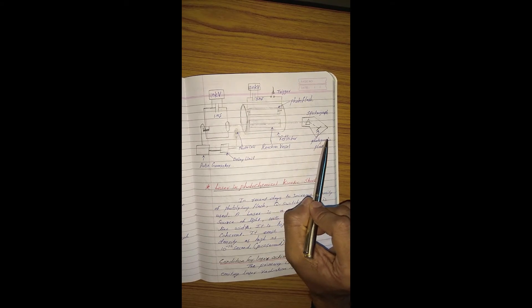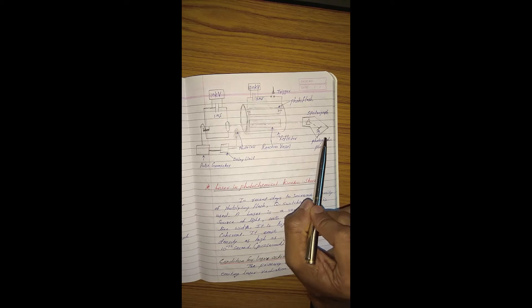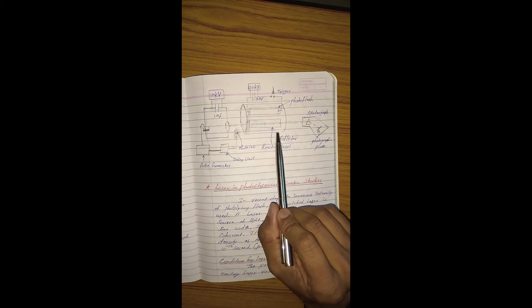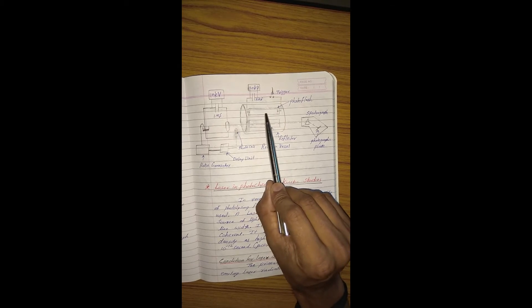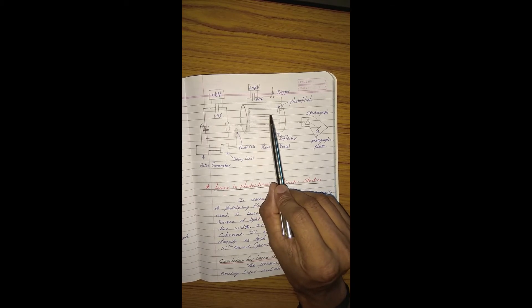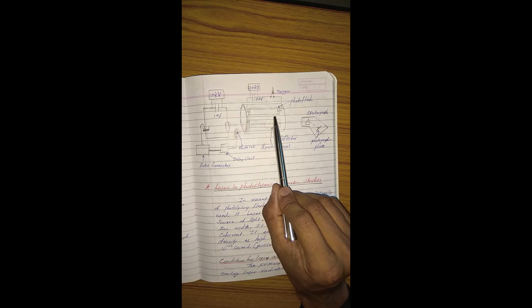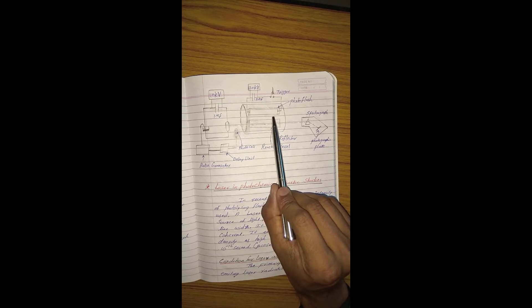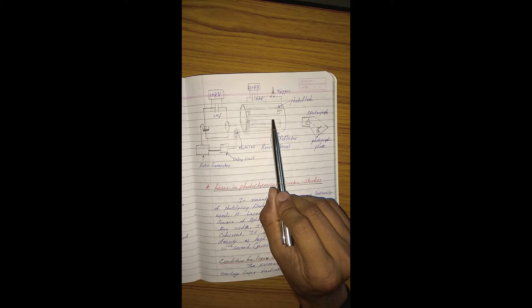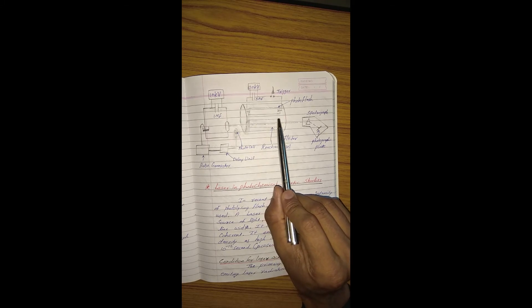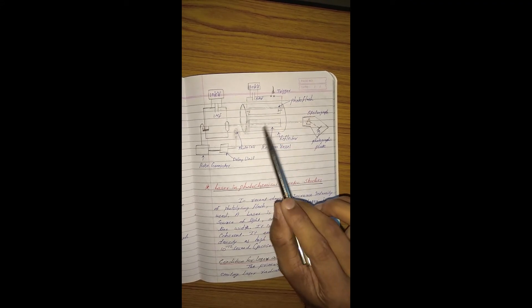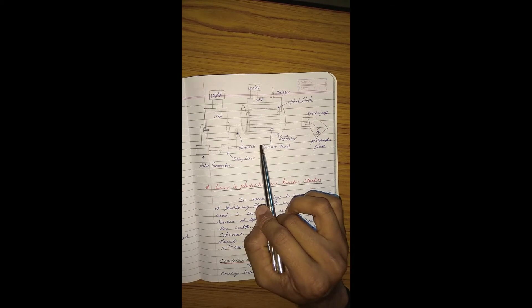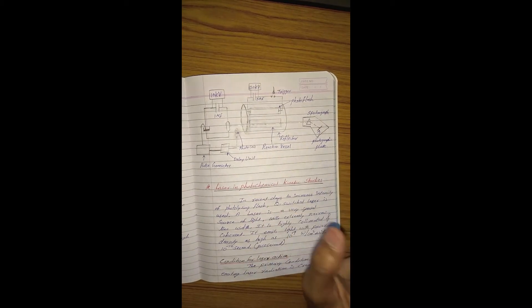The duration of the photolytic flash is set to 1 to 10 microseconds. The flash generated by this photo flash produces very high intense light of energy around 20 to 2,000 joules within 1 to 100 microseconds. This is the flash photolysis method which we commonly use in photochemical studies.